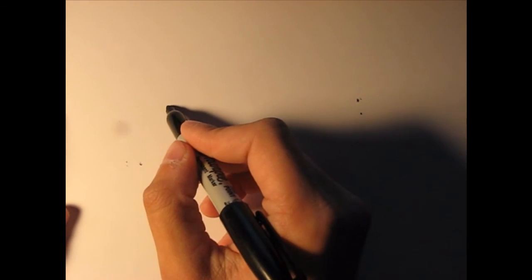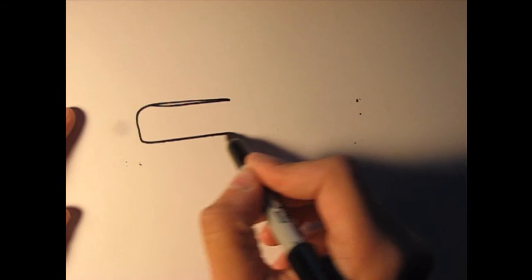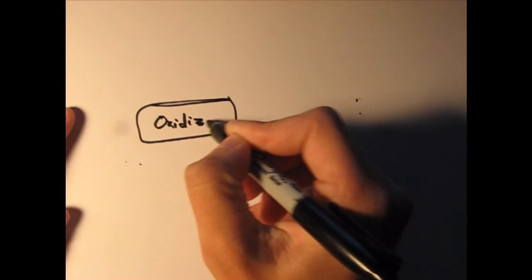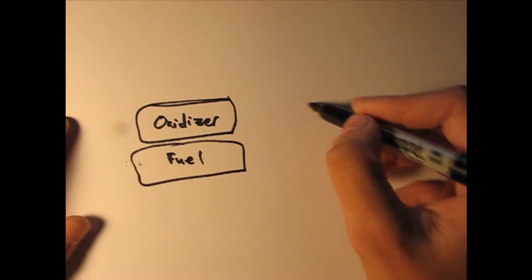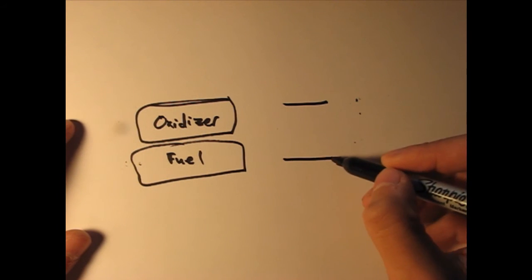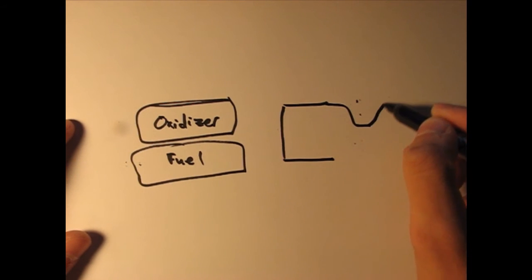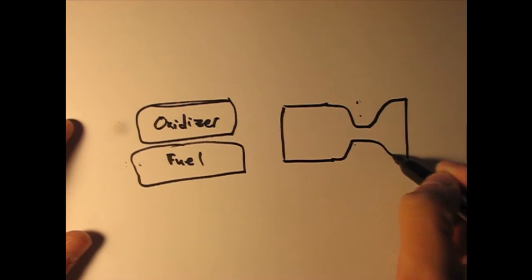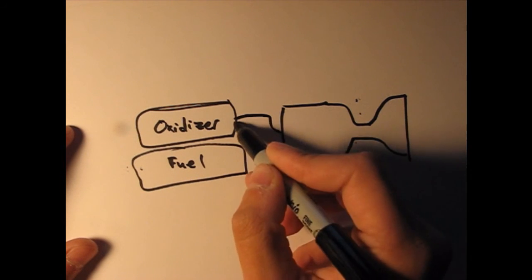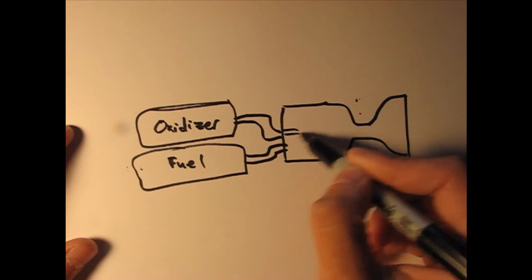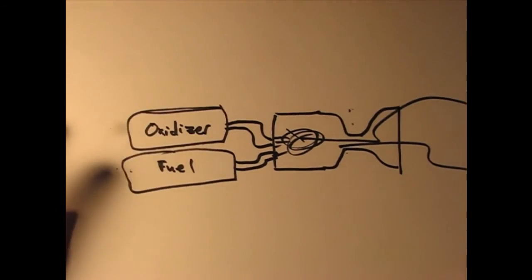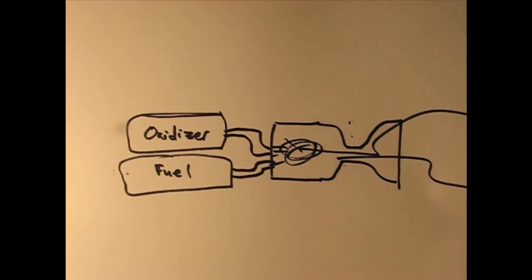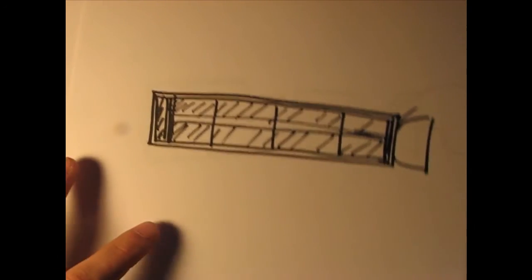All right, let's talk about a liquid fuel engine. We have a tank for the oxidizer. We have a tank for the fuel. We have the combustion chamber and the nozzle. And fuel injectors that squirt the stuff in here, mix it together and ignite it and mix it together. So that's basically how that works. So this stuff should be basic. You probably already know it.